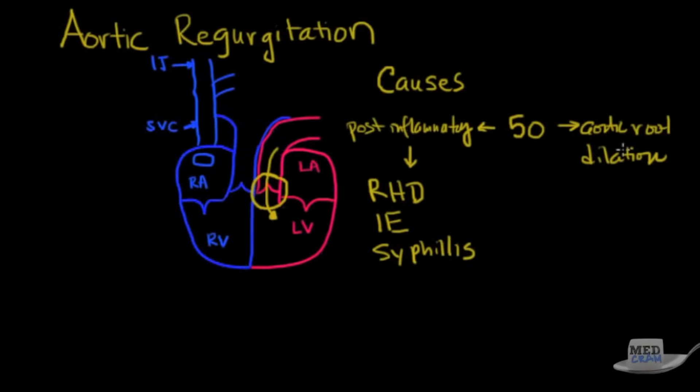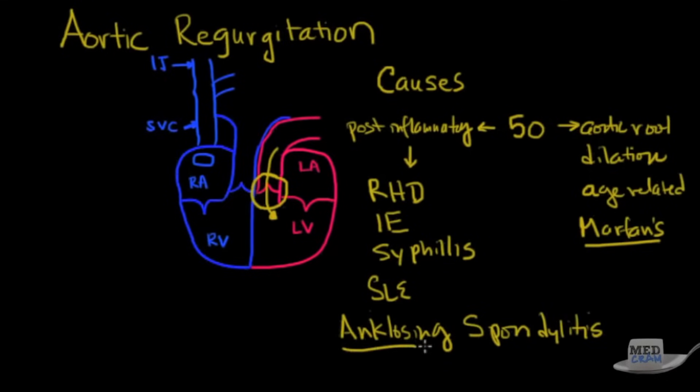In terms of aortic root dilatation, think about other things. Think about age-related or the other one to think about is Marfan's syndrome. Marfan syndrome, as you may know, is where they're very tall, they've got long legs and long arms and they can get aortic root dilatation. In terms of other things to think about is think about lupus or SLE and this thing called ankylosing spondylitis, where they get the bamboo spine.